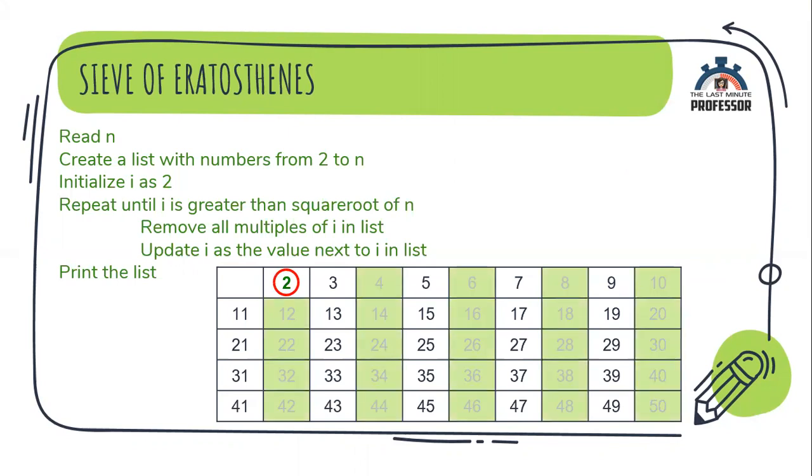Next, we'll consider the next available prime number, that is, update i as the value next to i in the list, that is 3. So, 3 being less than or equal to 7, the condition is satisfied. So, the two statements inside the loop gets executed. Remove all the multiples of 3 in the list and update the value of i as value next to i in the list, that is, update i as the next available prime number 5.